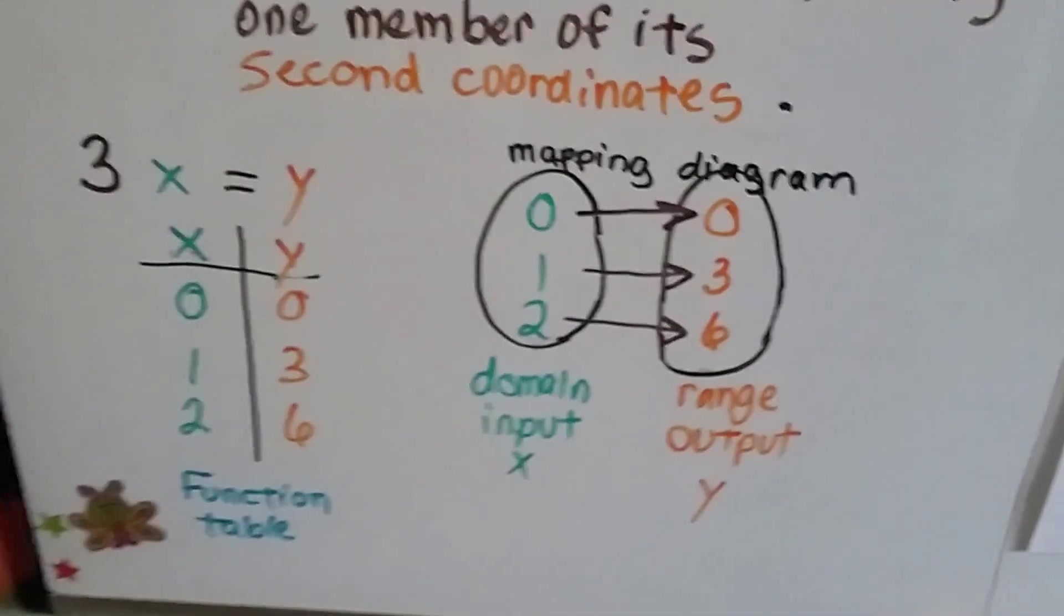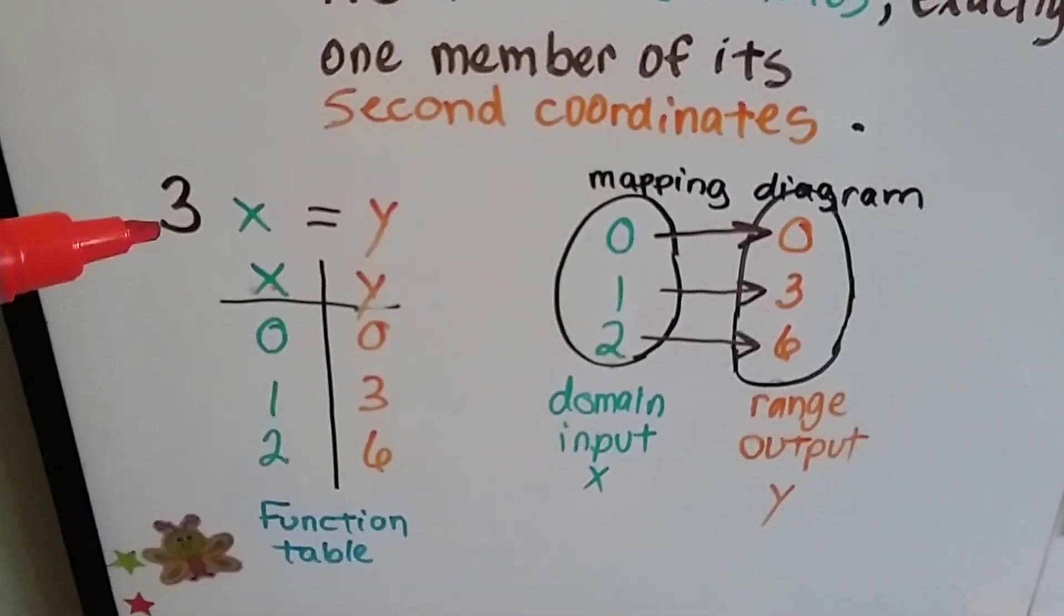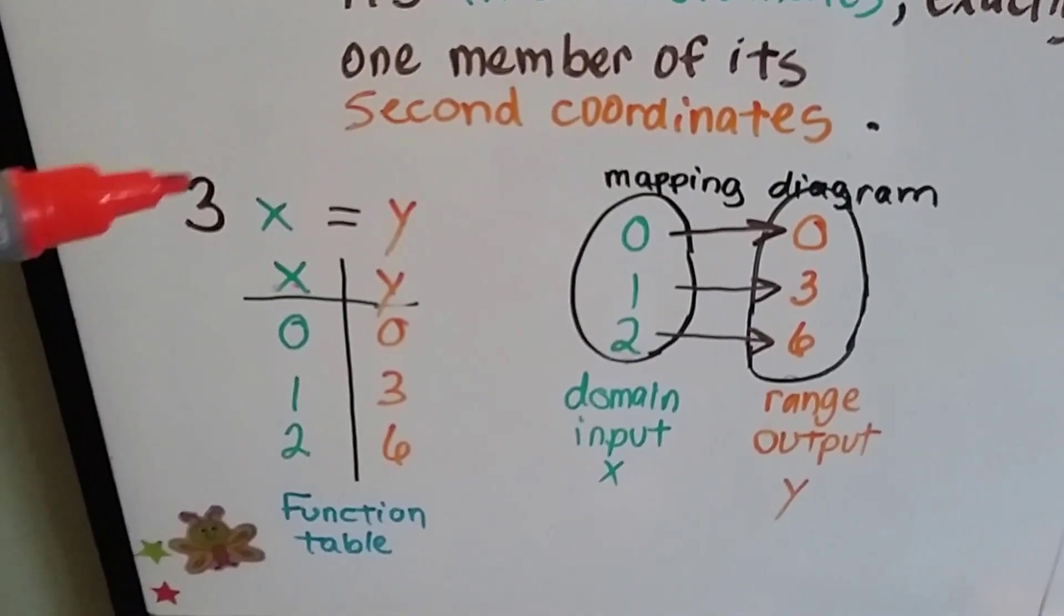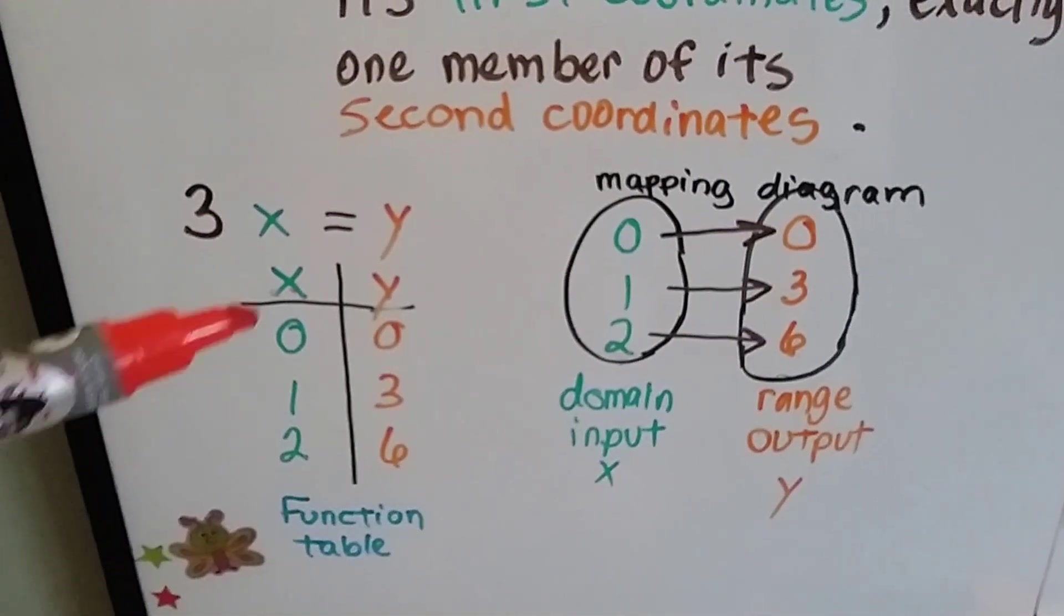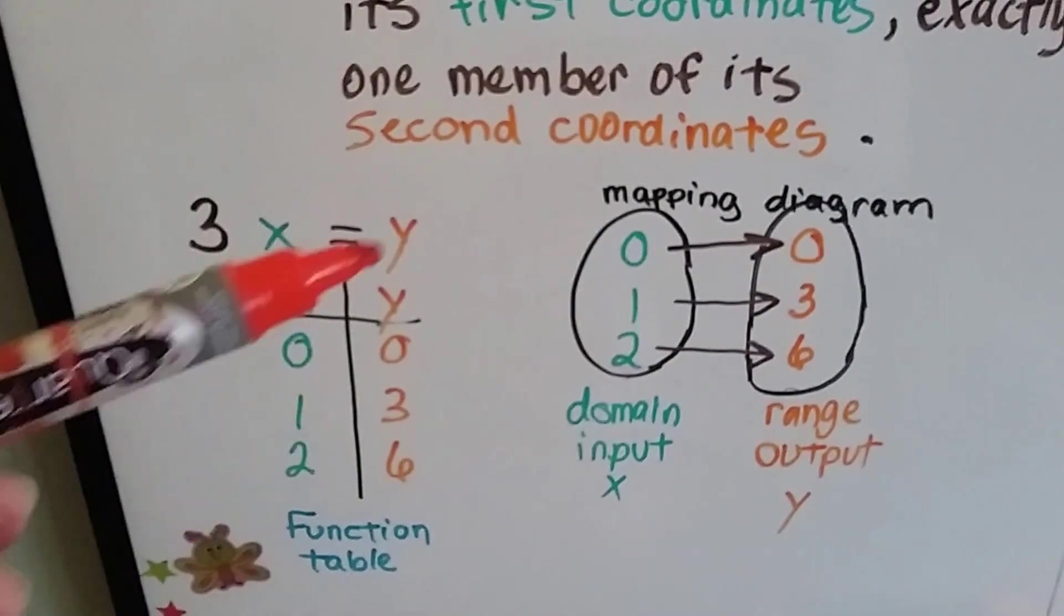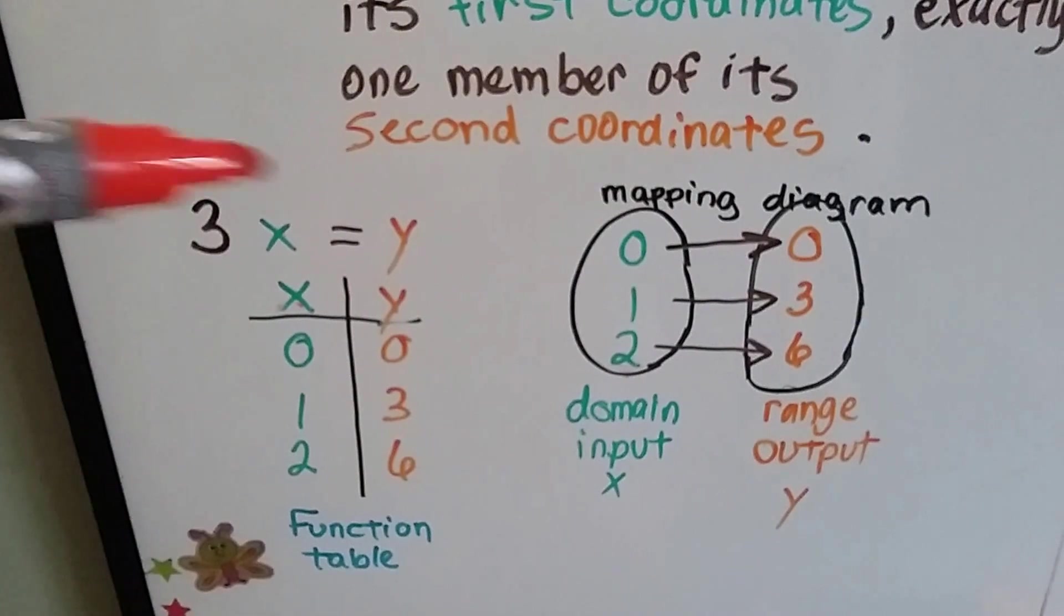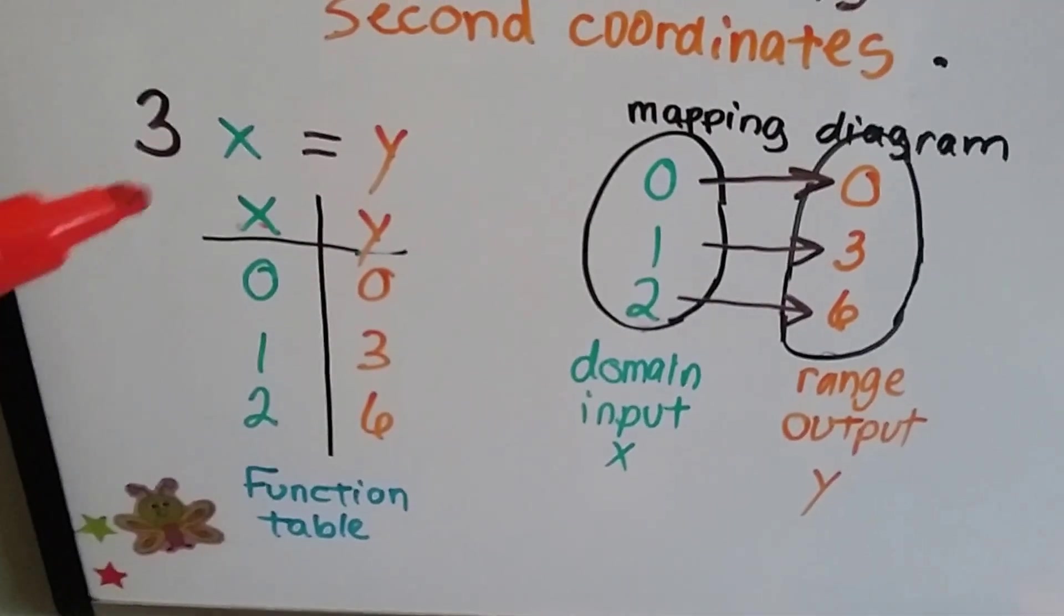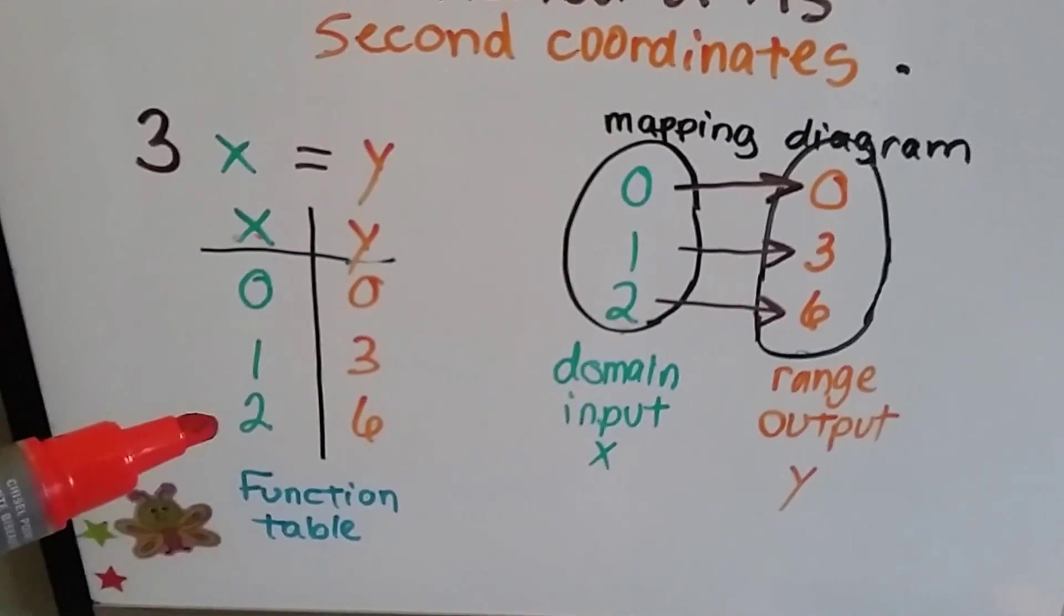So take a look at this function table right here. Now we also have a mapping diagram, but let's look at this function table. So for the values of x and y, the domain and the range, 3x equals y. Whatever the values that stands for x will make y true. So if x is 0, then y is 0 because 3 times 0 is 0. And if x is 1, then y is 3. And if x is 2, then y is 6.